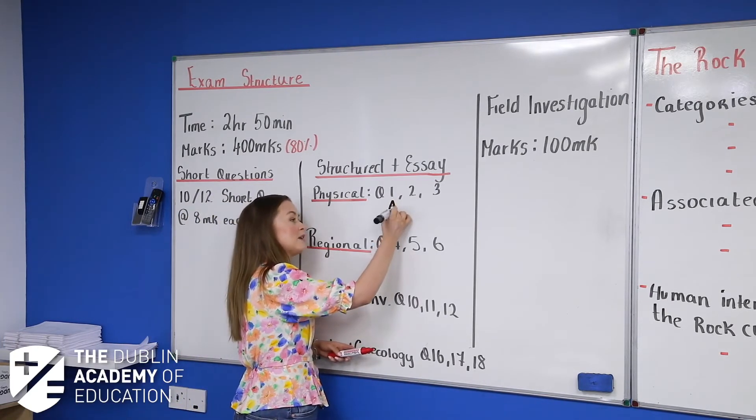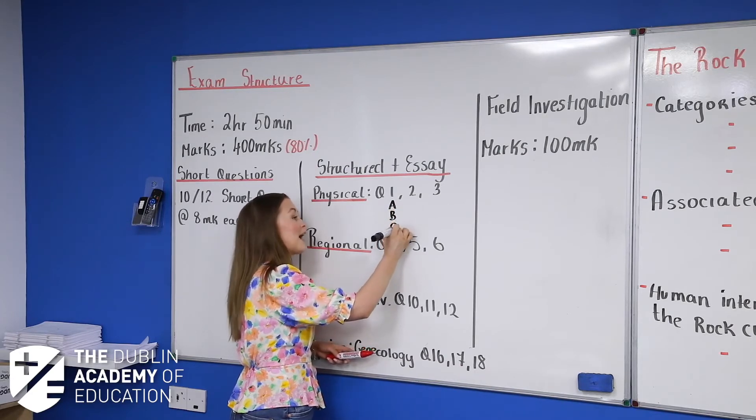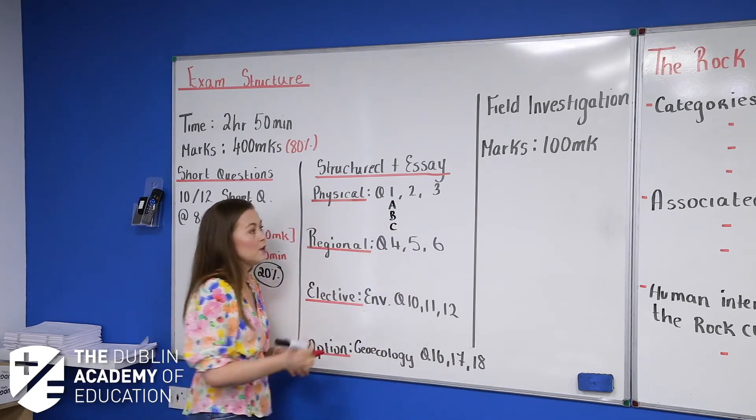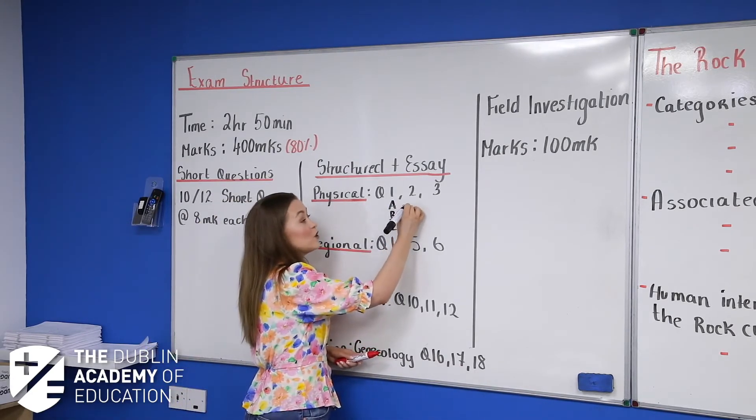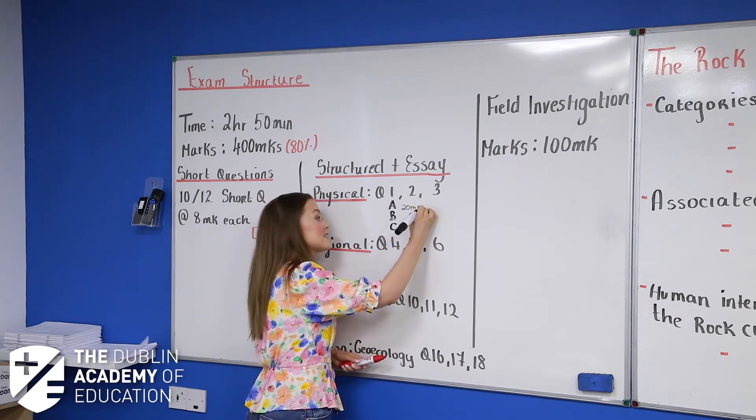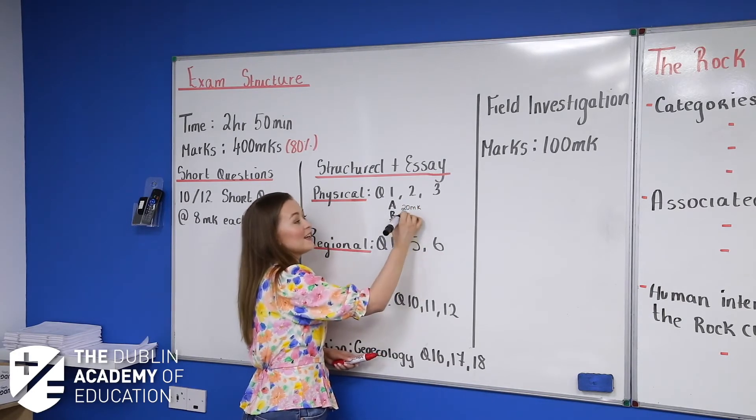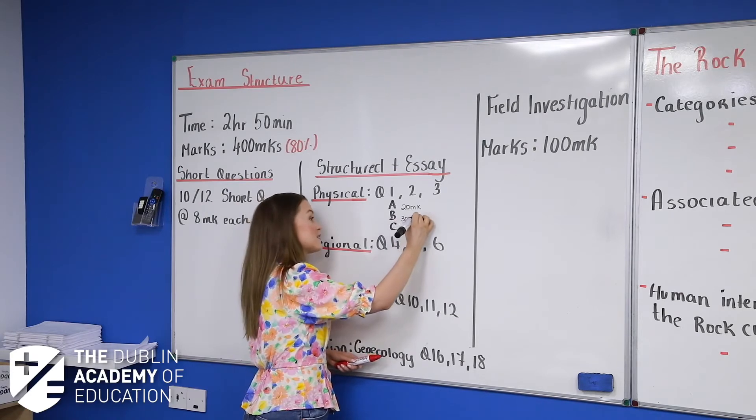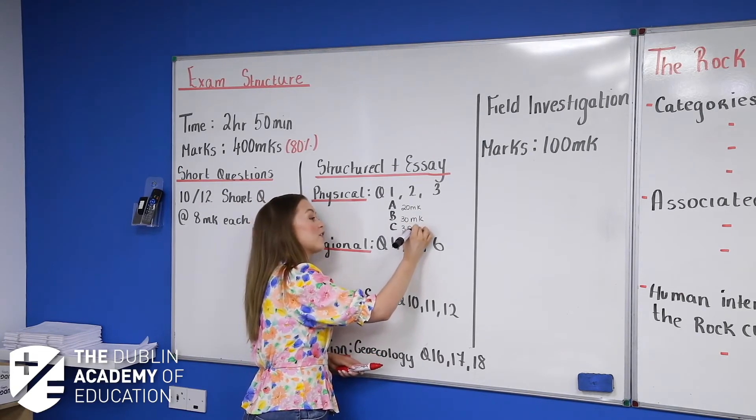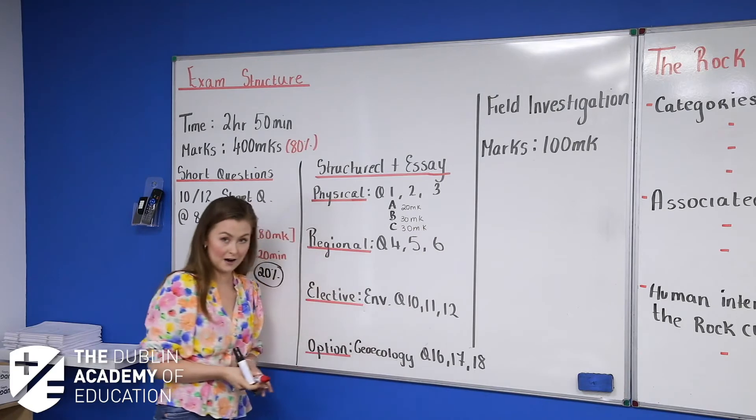Now they all have the exact same structure. They all have part A, a part B, and a part C. Your part A is worth 20 marks. Your part B is worth 30 marks. And your part C is worth 30 marks.